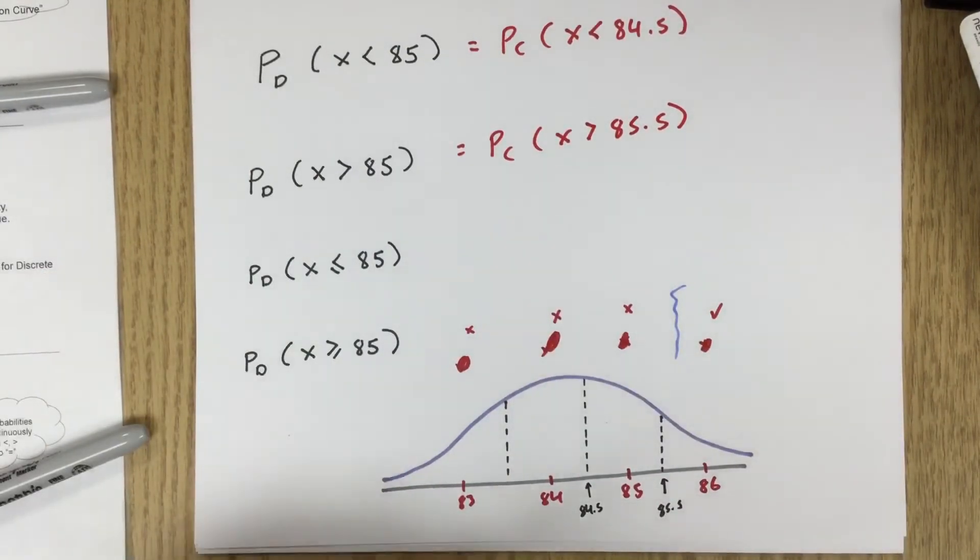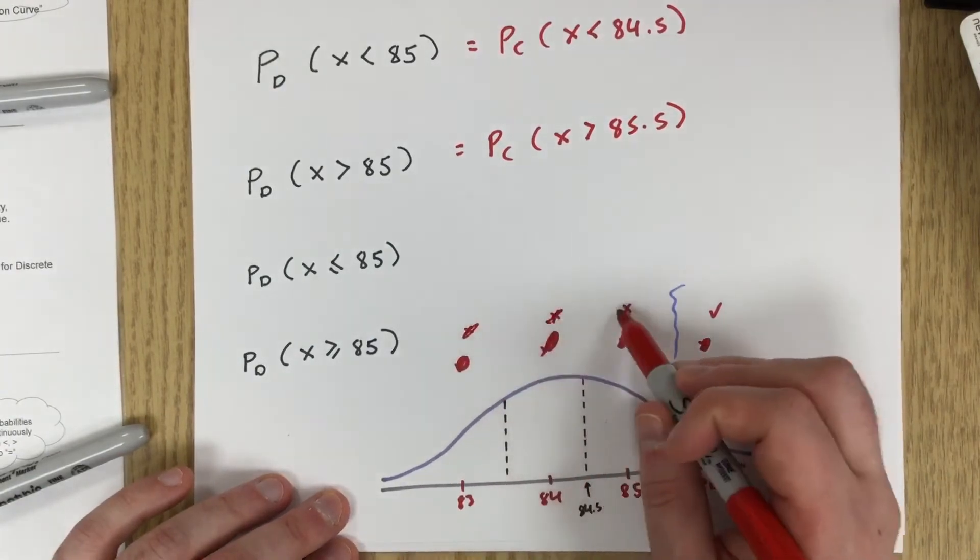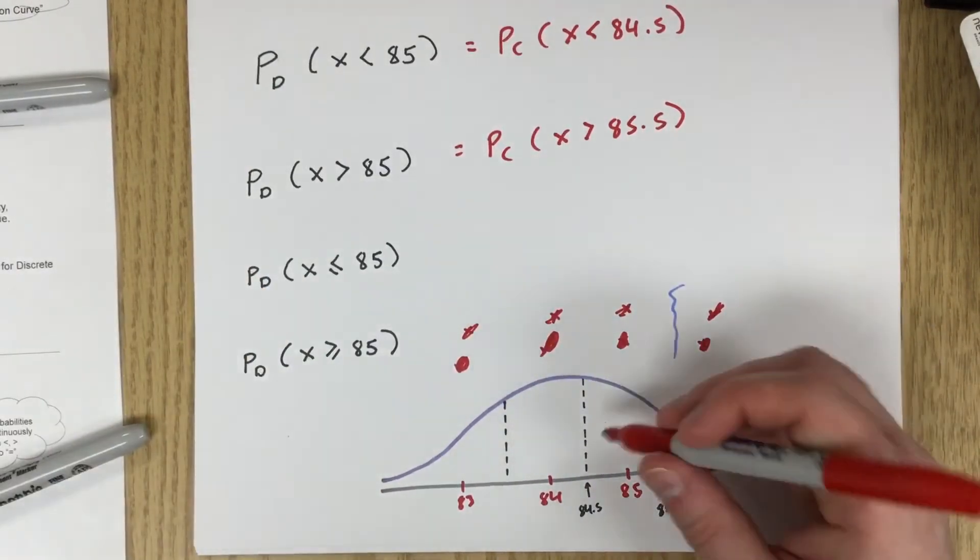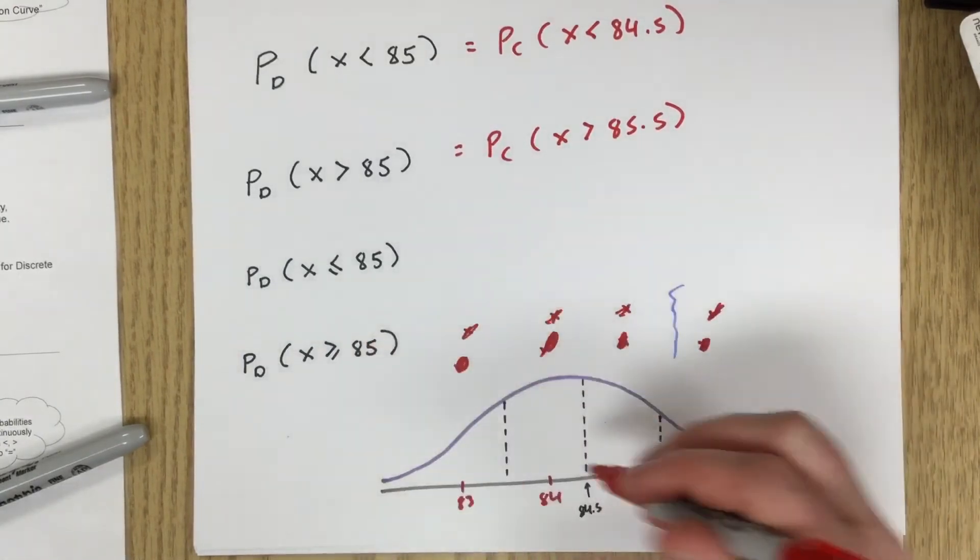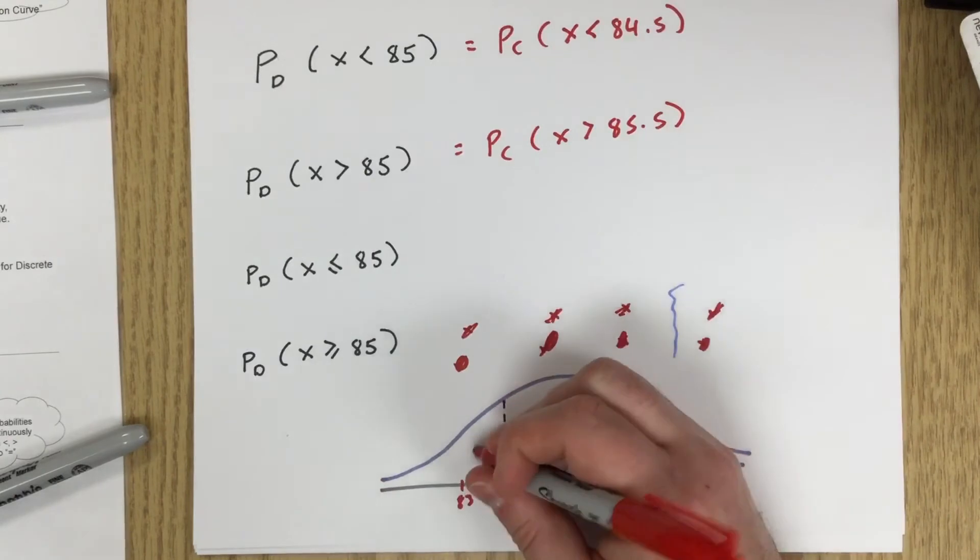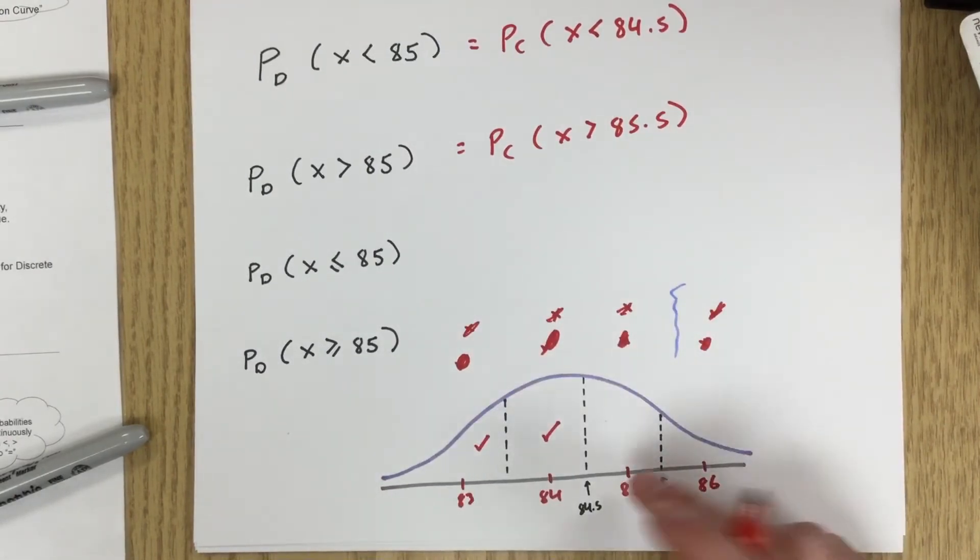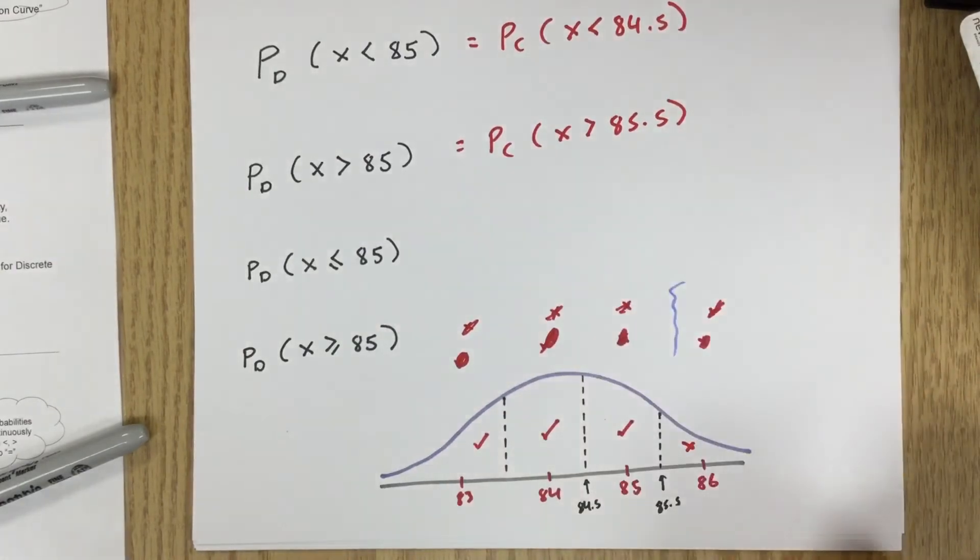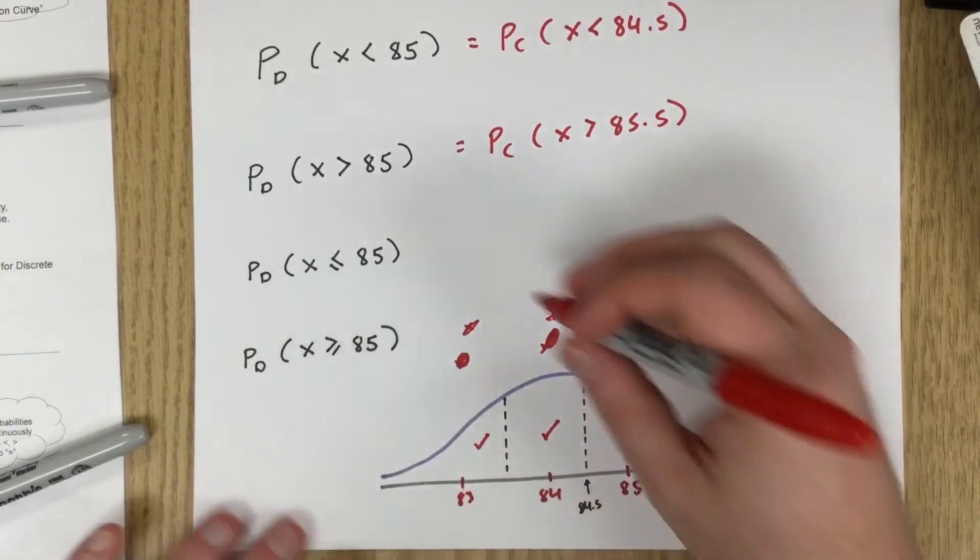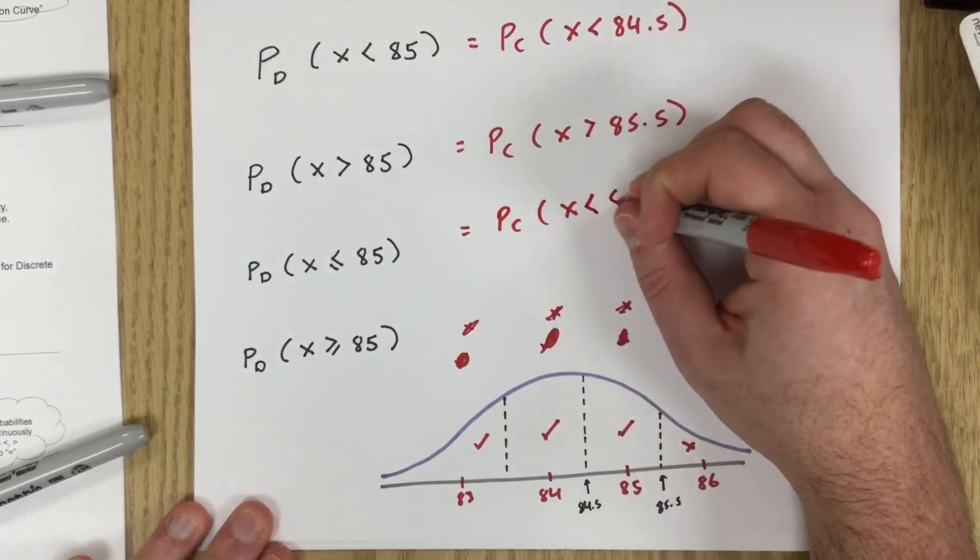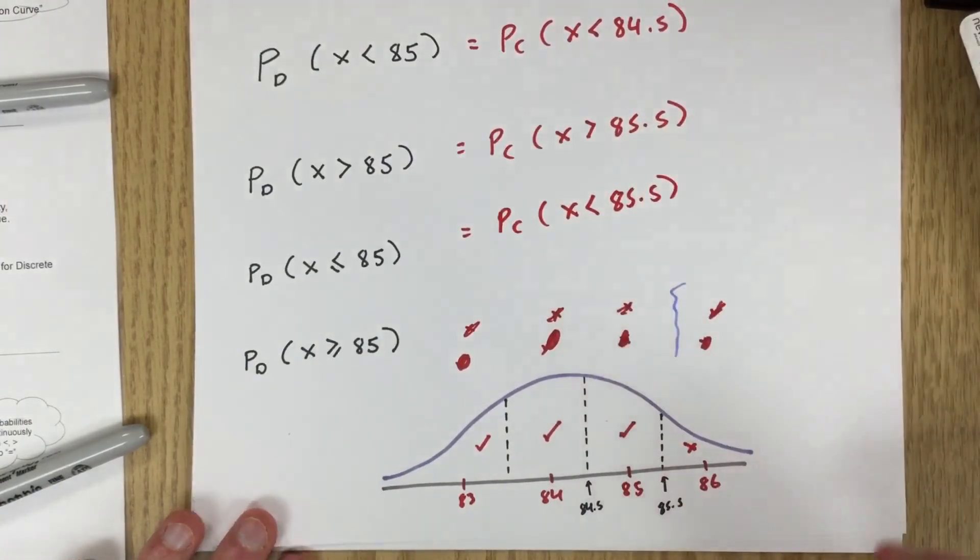Less than or equal to 85. Well in that case, let's do it again. Is 84 less than or equal to 85? It is. Is 83 less than? It is. Is 85 less than or equal to 85? It is. And so actually that one has the same cutoff. But in this case it's going to be that or less. So that's going to be the same as x is less than 85.5.